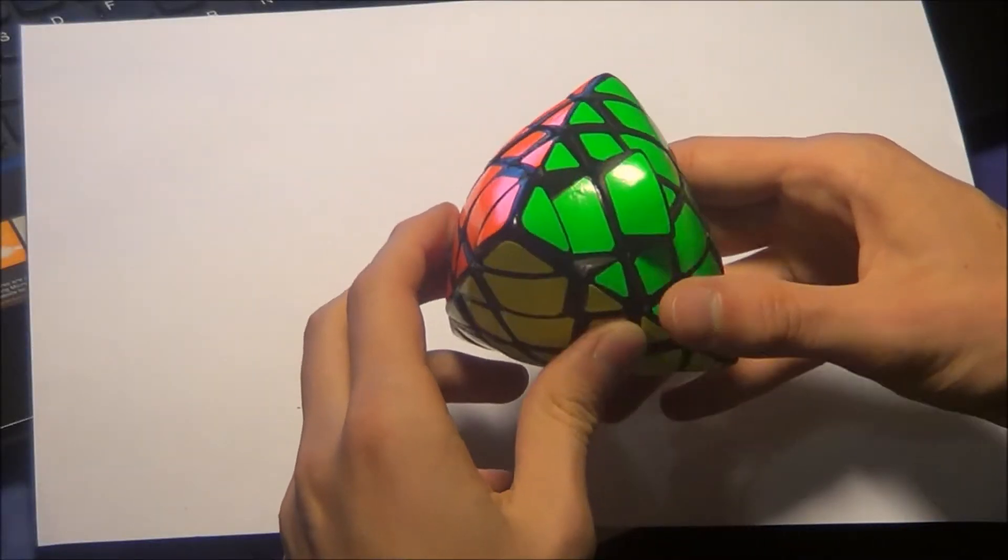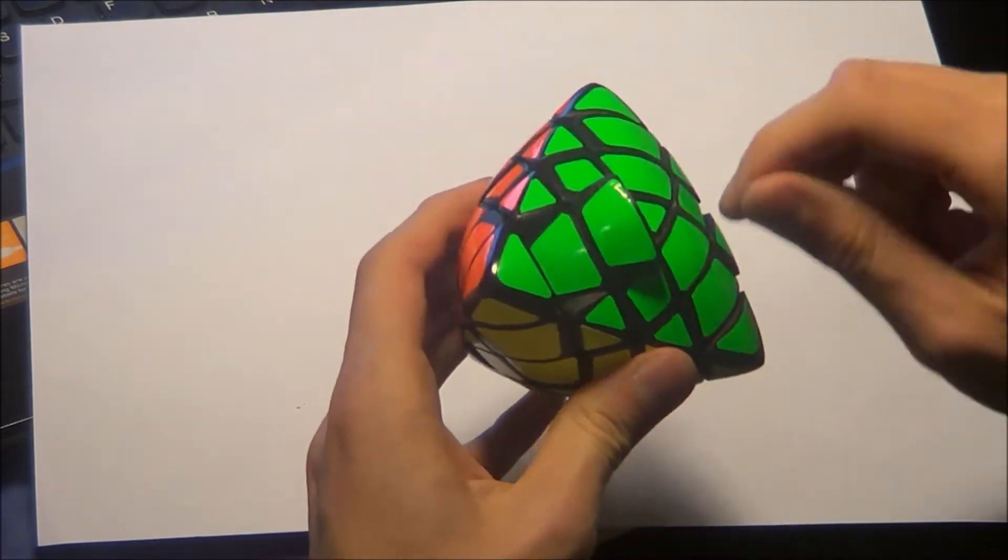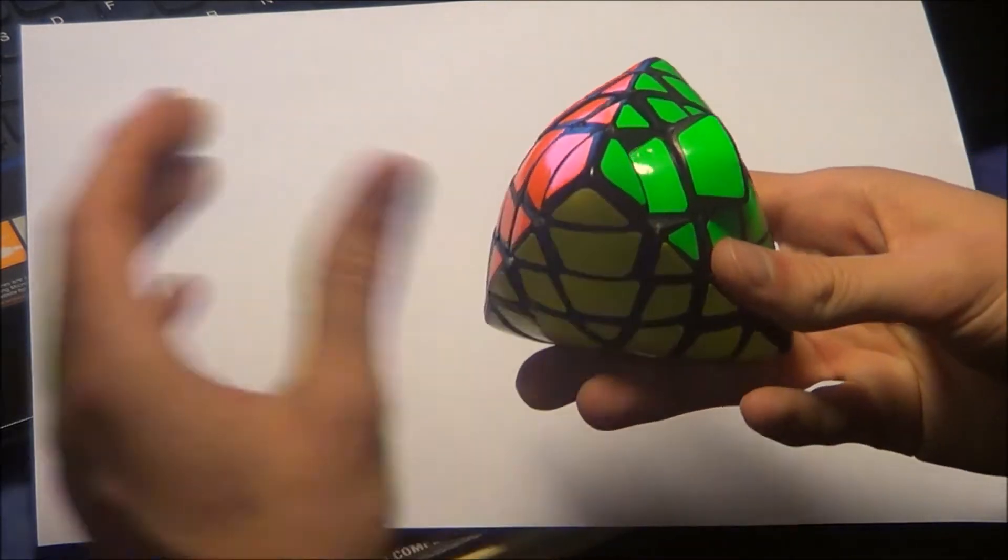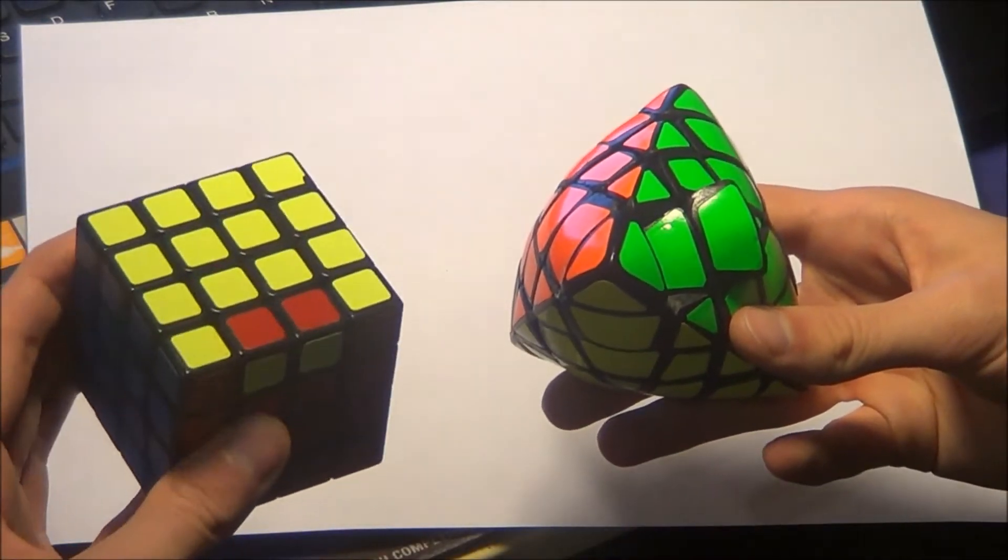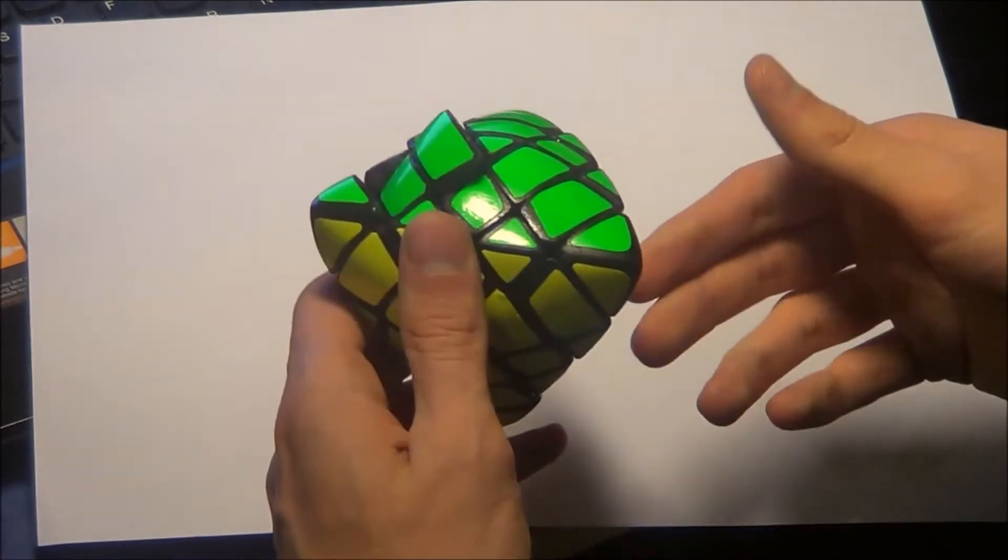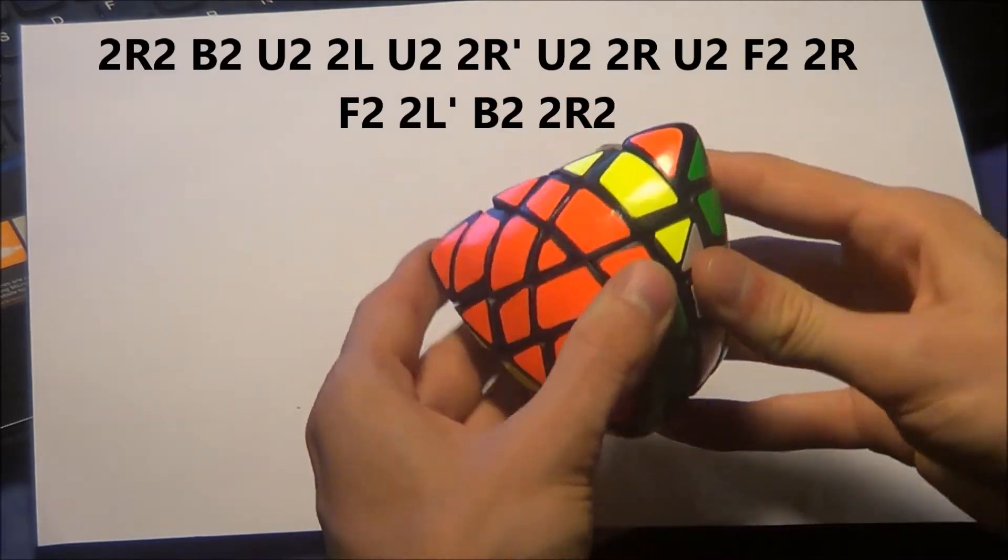But now let's start with the first parity. Like I said before, you only have to switch these two paired edges here in front of you. Like on the normal 4x4 puzzle, it's exactly the same parity, so let's start.